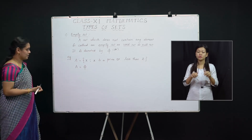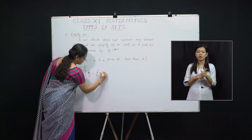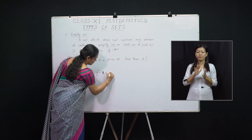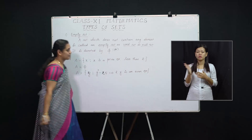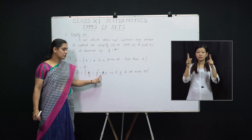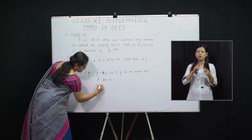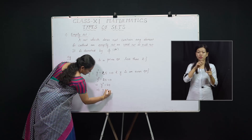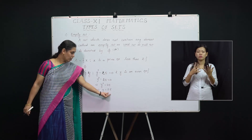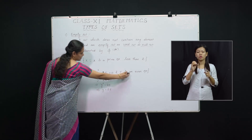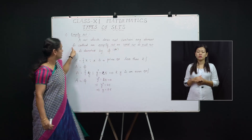So we can write A equal to Phi. Another example: A is the set of all y such that y² − 25 = 0 and y is an even number. Now y² − 25 = 0 implies y² = 25, so y = ±5. But here we need y to be an even number. Both ±5 are odd numbers, so they don't satisfy this property. Therefore the set is empty.